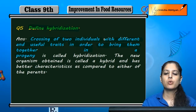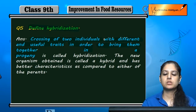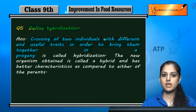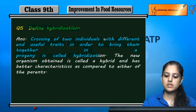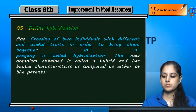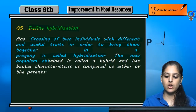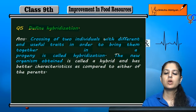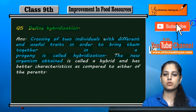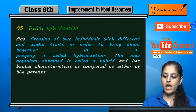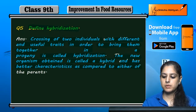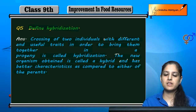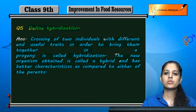When offspring receive all the good traits this way through crossover, it is called hybridization. The new organism obtained has better characteristics as compared to either of the parents.